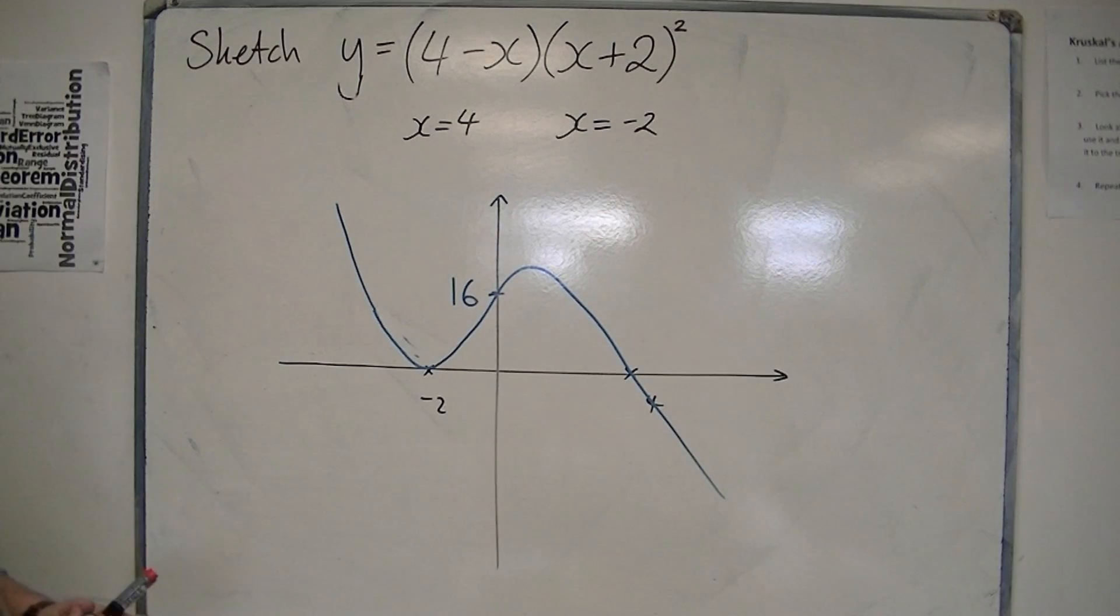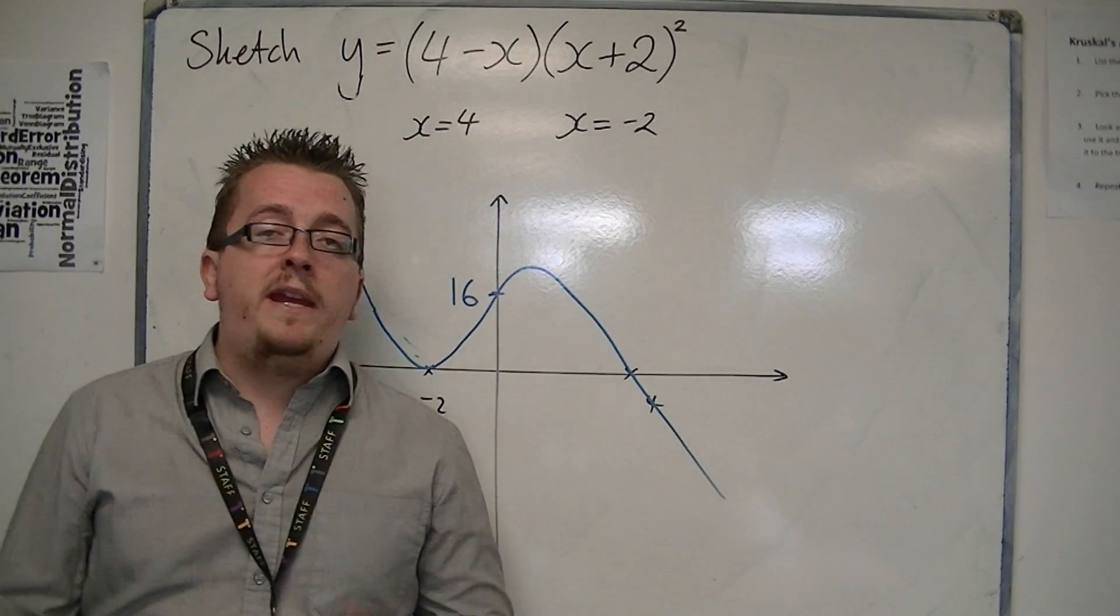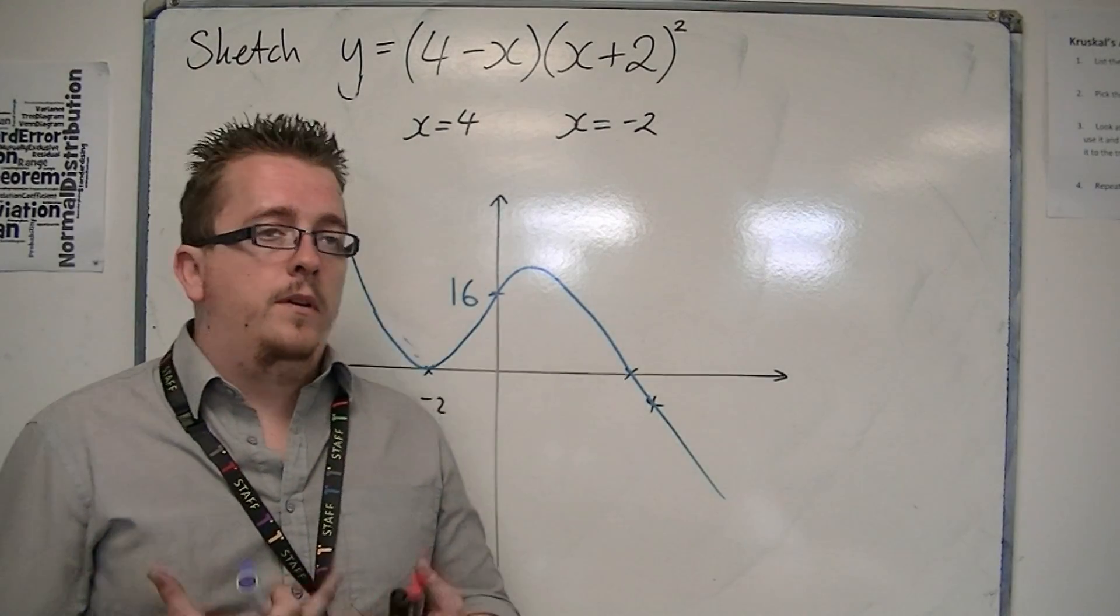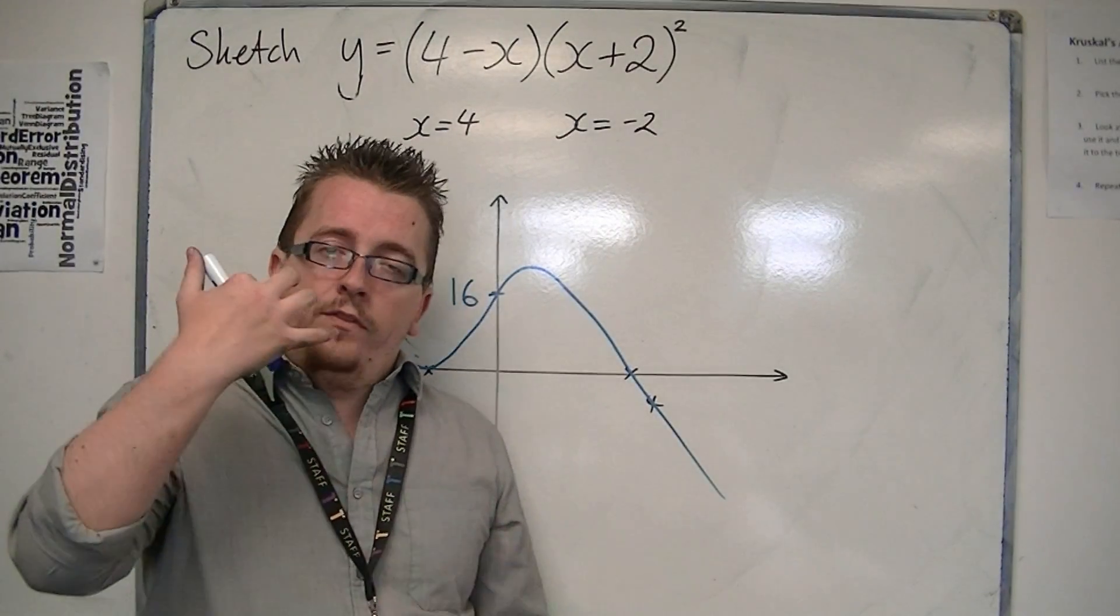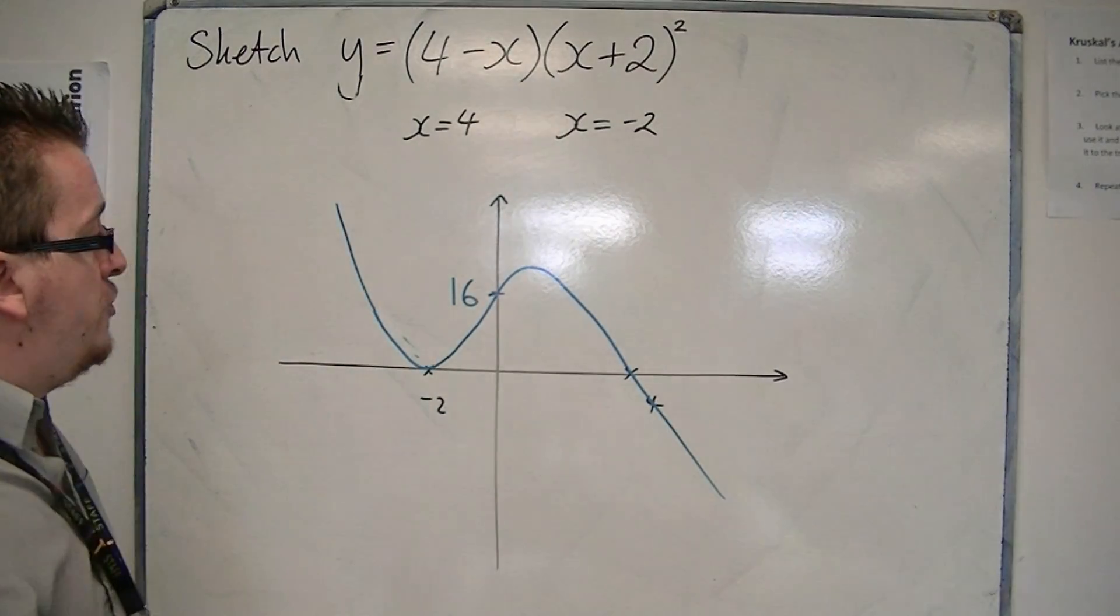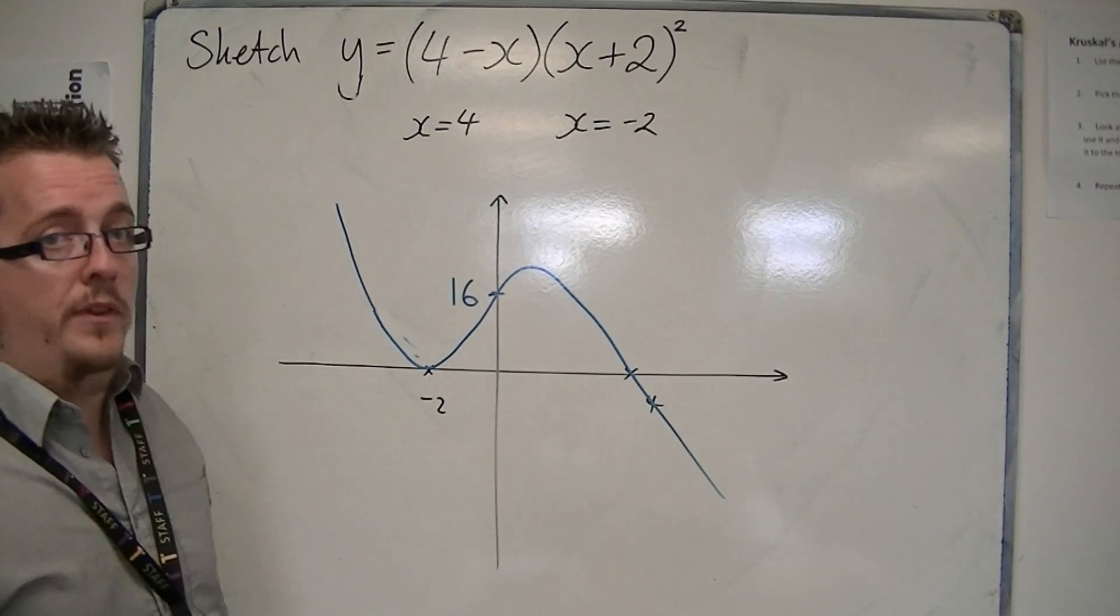And that is how we would do it. So if you get a repeated root, so we've got two linear terms the same, then the curve is just going to touch that point once. It's not going to cross it there, so you'll get a situation like this.